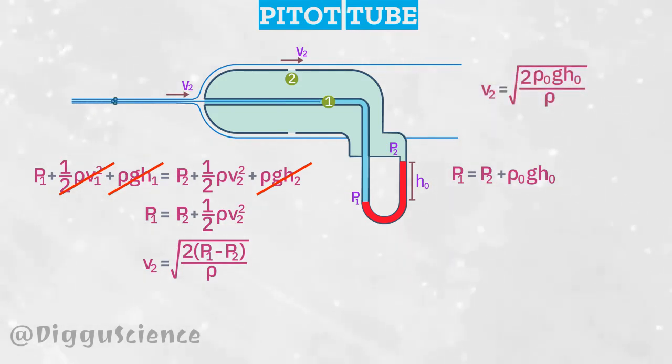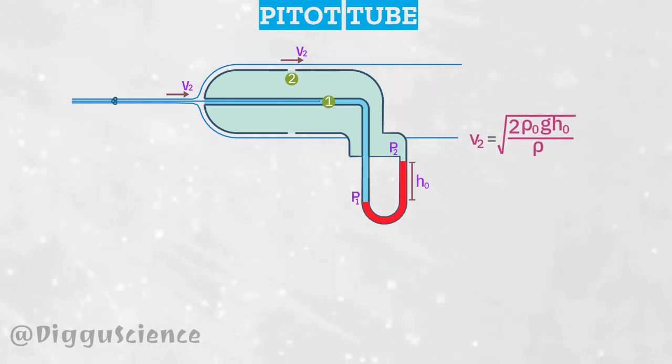Thus, v2 = √(2ρ0gh0/ρ). This is the equation of the Pitot tube.